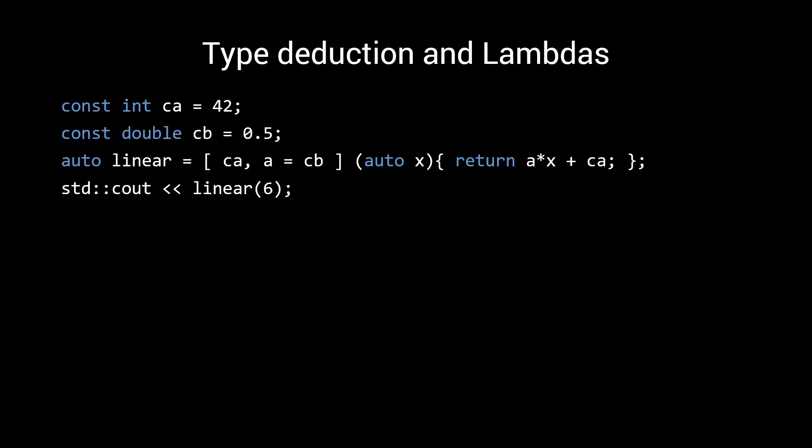Lambdas. They were introduced in C++11, and extended in C++14. They give us a way to quickly define an anonymous function, and are ideal for customizing behavior of standard library algorithms, or for making our own algorithms more flexible. Here I have defined a one-line lambda representing some linear formula of the form A times x plus a constant CA. In this simple lambda, we see several kinds of type deduction happening.